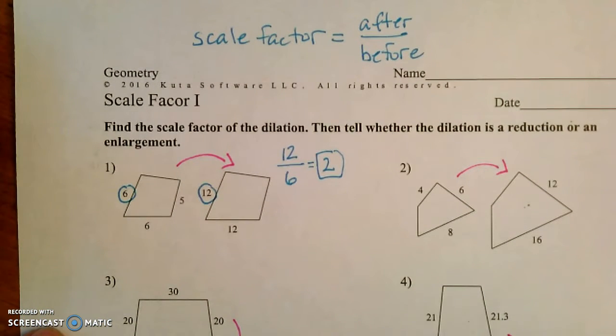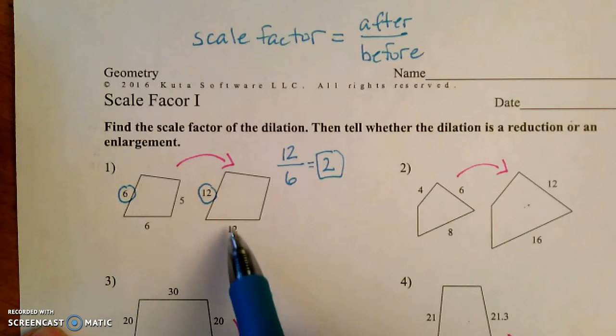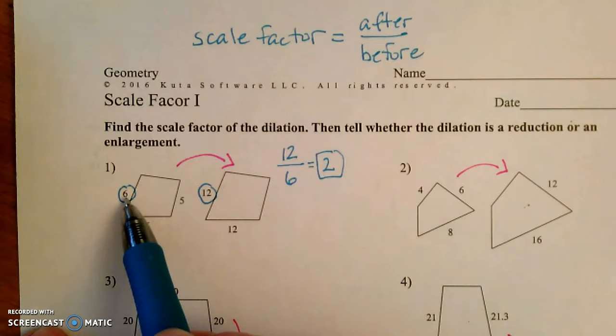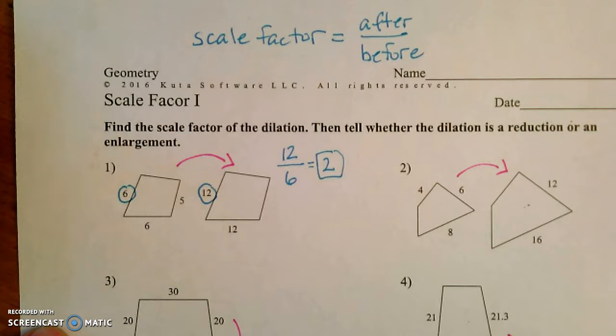One thing you do want to make sure of is that you're dividing the correct side by the correct side length. I couldn't just go 12 divided by 5, that really wouldn't work. But I think it's fairly clear here that the 12 corresponds to this 6 and this 12 corresponds to this 6 over here.